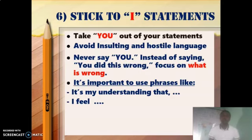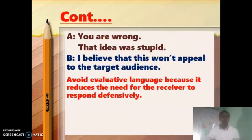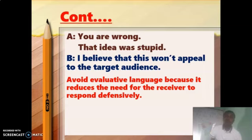Tip six is about sticking to 'I' statements. Avoid 'you' in your statements every time you give constructive criticism. Never say 'you' because it is hostile and insulting. Instead of saying 'you read this wrong,' focus on what is wrong using phrases like 'it's my understanding that...' or 'I feel...' For example, 'you are wrong, that idea is stupid' is evaluative language, whereas 'I believe that this won't appeal to the target audience' is better. Evaluative language reduces the receiver's need to respond defensively, so be careful about how you use 'I' statements.